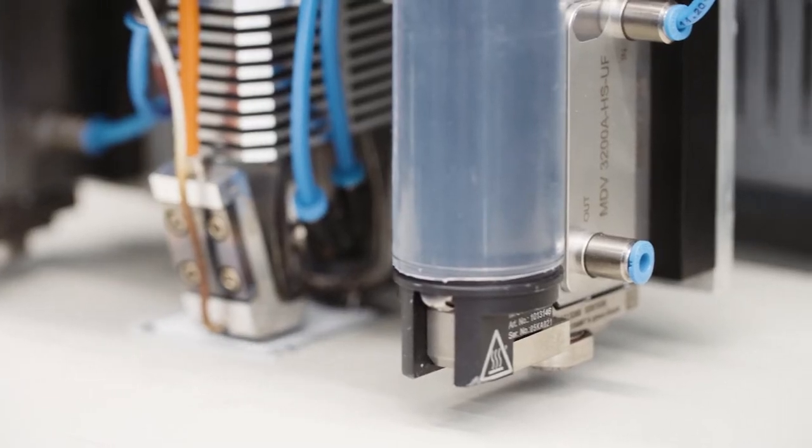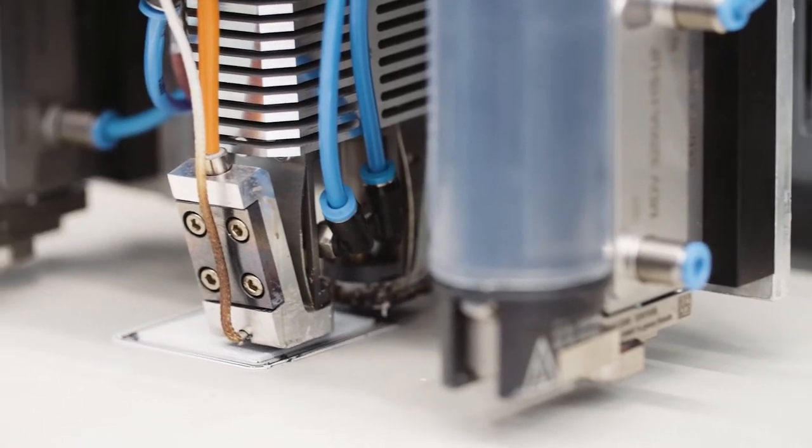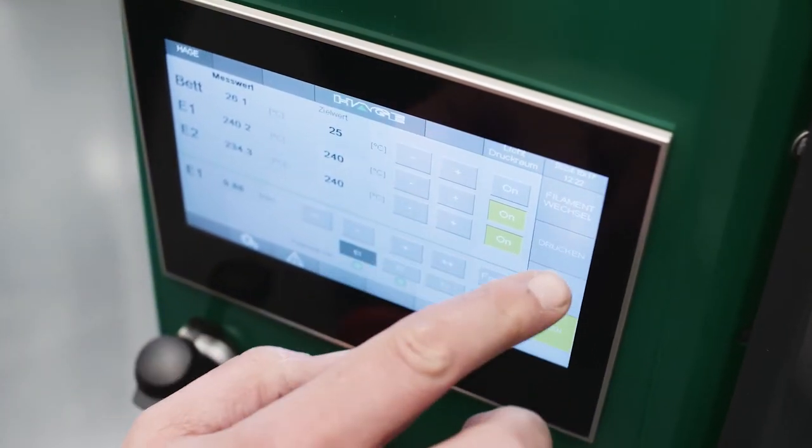When that layer is finished, the printing table is lowered by the thickness of the layer and another layer is added. In this way, layer upon layer, a complete component is built.